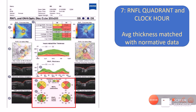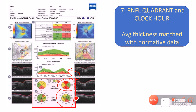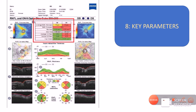The next component is the RNFL quadrant or clock hour maps. The circle is divided into four quadrants — superior, inferior, temporal, and nasal. Color coding is similar to the TSNIT map: red indicates danger (very thinned RNFL), yellow is borderline, and green is normal. We also have a clock hour representation in which the circle is divided into 12 clock hours, and the RNFL thickness is represented for each clock hour.